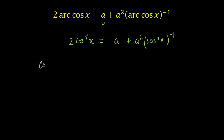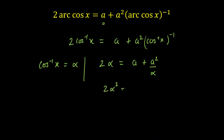Let's say for a moment that cos⁻¹(x) = α. I am going to write the equation in terms of α: 2α = A + A²/α. Now multiplying by α throughout the equation gives 2α² = Aα + A². Writing this as a quadratic in terms of α: 2α² − Aα − A² = 0.